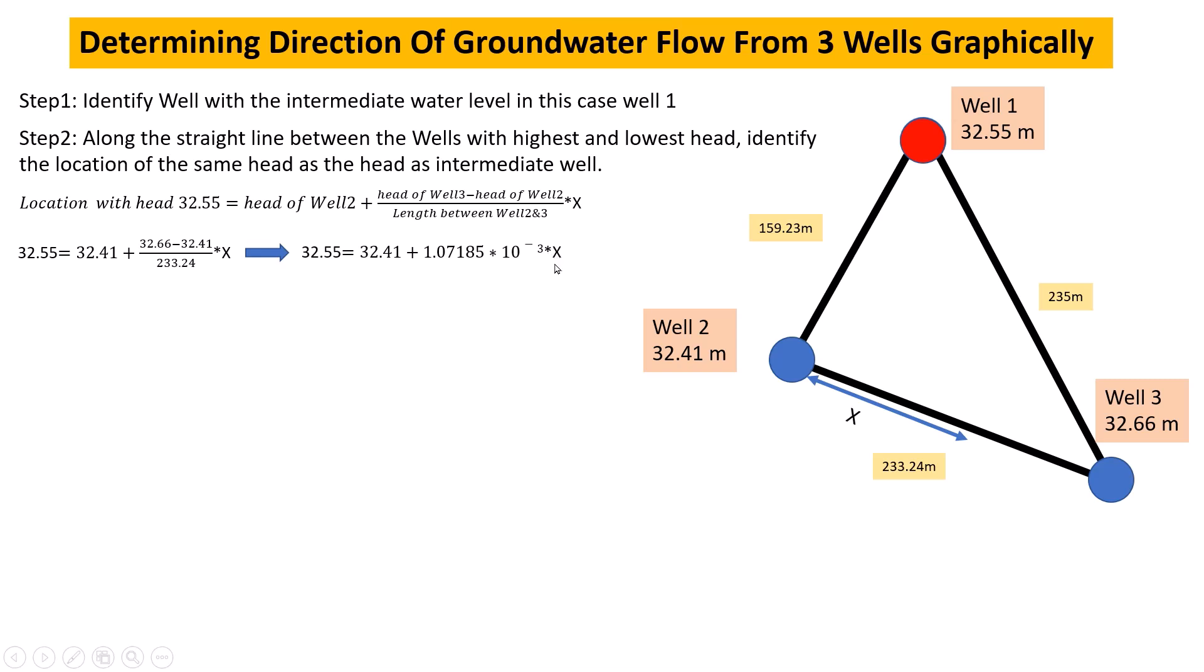Solving for x: x equals the difference of water tables divided by 1.071 times 10 to the power of minus 3, which equals 130.61 meters. Now we determine this location.